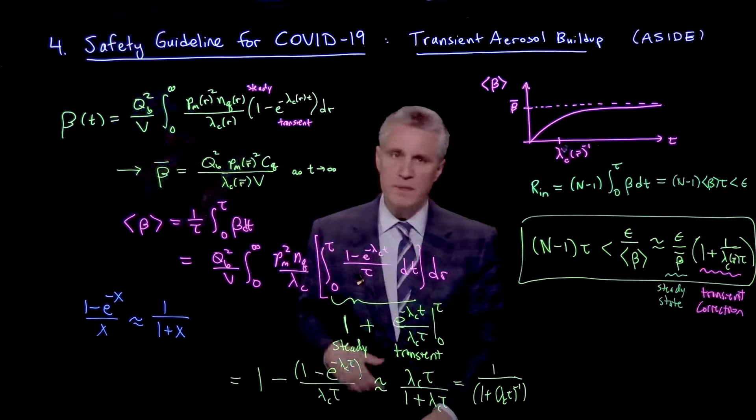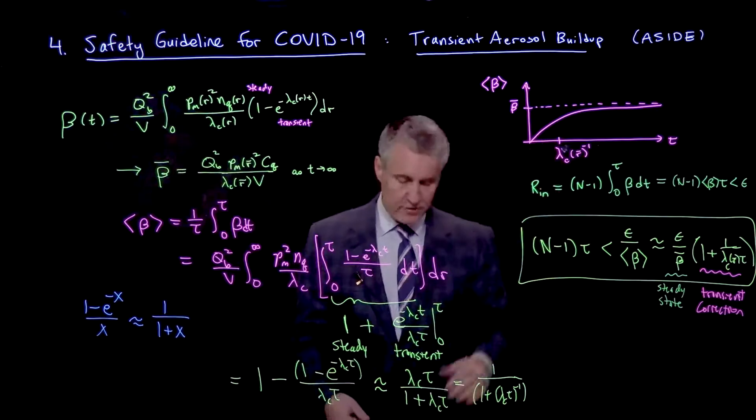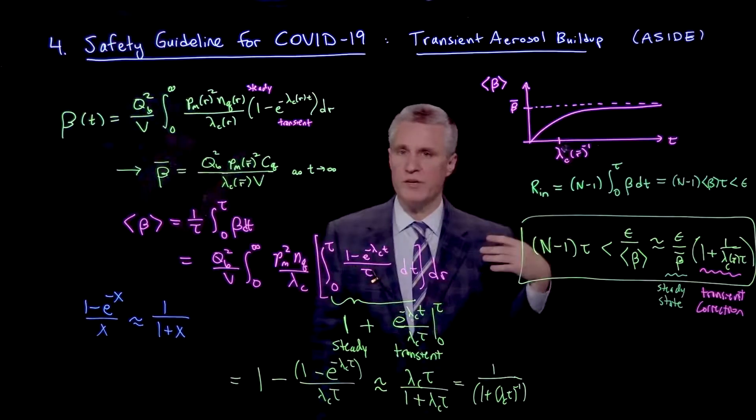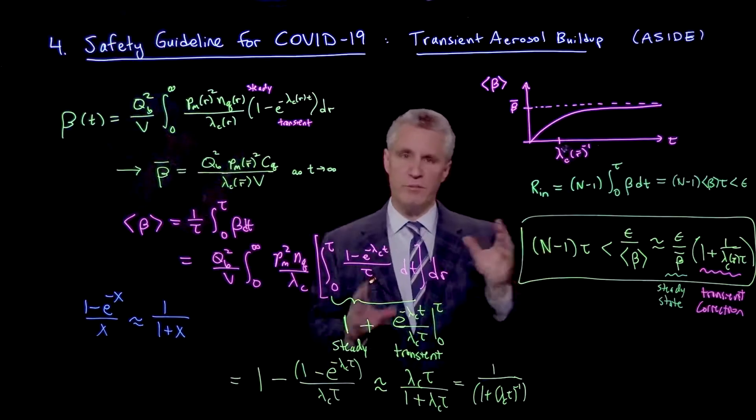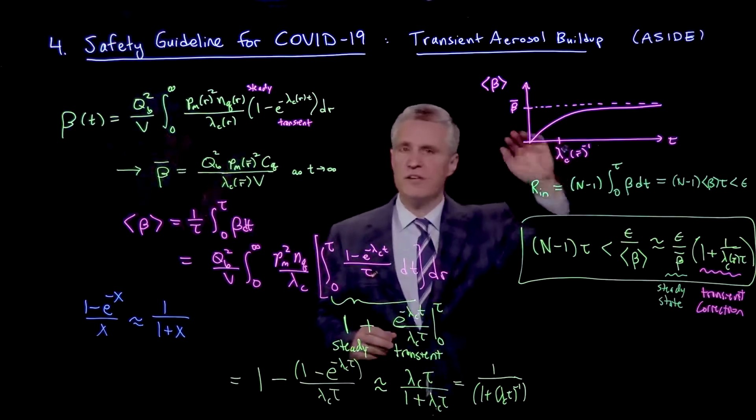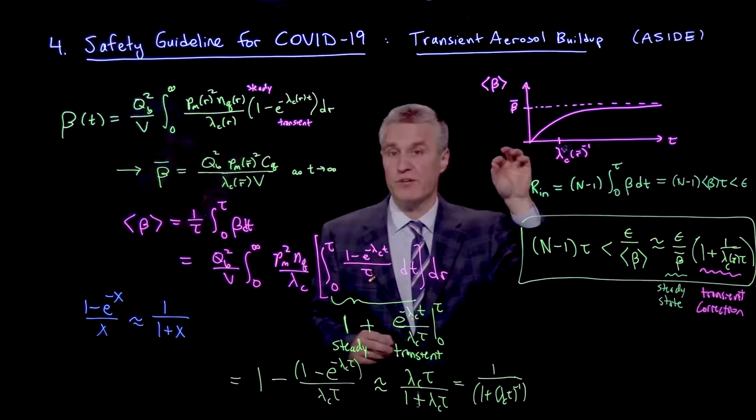Now, why do we care about the transient? Well, first of all, you can see that by using the transient, we are being less conservative. So if we want to be very conservative, we can say, you know what? Let's just assume the second that the affected person enters the room, boom, the transition rate goes right to the maximum value.